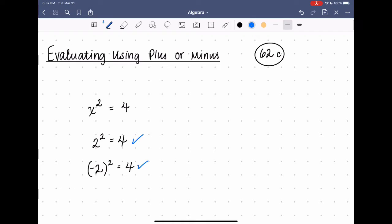So when we see something like this, we're going to have to write the answer as positive or negative 2. We just write it right on top like that, plus over the minus.